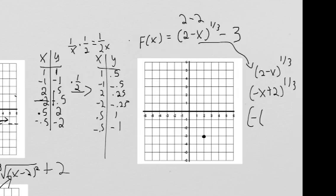If we take a negative away from a negative x, that just leaves us with positive x. And if we take a negative away from a positive 2, that just gives us negative 2. Then we raise all of that to the one-third. Our input is having 2 subtracted, which shifts it to the right 2. But our inputs are also being multiplied by a negative, which means this is going to get reflected across the y-axis.